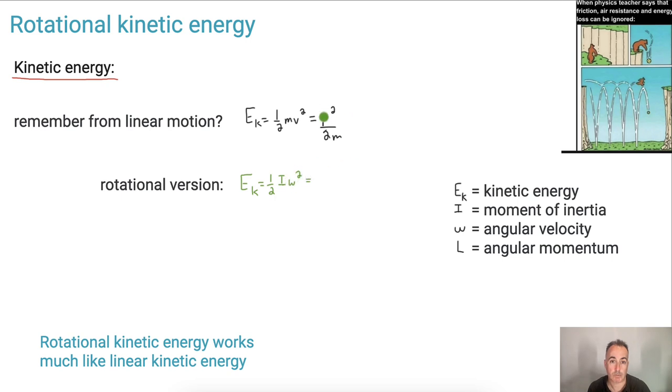It's also going to be the same as, well, what's the linear momentum? Remember, it's called L, so it's going to be L squared over 2. And what's M again? M is I. So it's going to be E_K equals one-half I omega squared, which is the same thing as L squared over 2I.